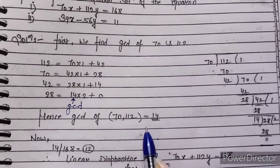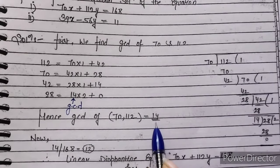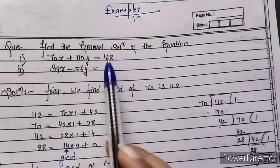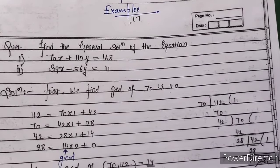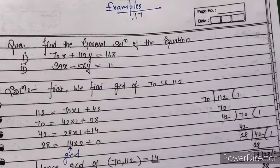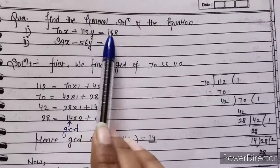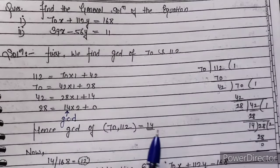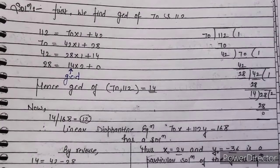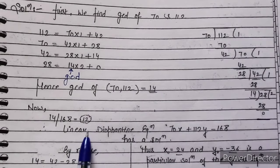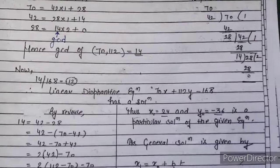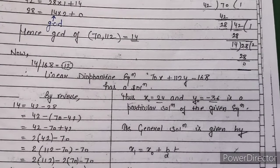Now we check whether GCD divides 168. If it does not divide, we will not get any solution. Here, 168 divided by 14 equals 12, so 168 is divisible by 14. This means this linear Diophantine equation will have a solution.